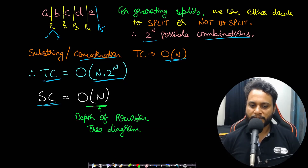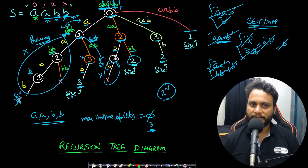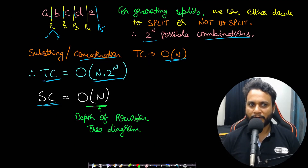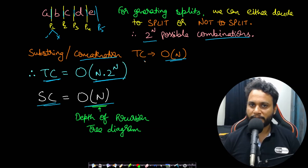For space complexity, since we are solving by recursion, the recursion call stack depth determines space usage. The maximum depth occurs when we always take splits of size 1, which gives a depth equal to the length of the string. So space complexity is O(n).